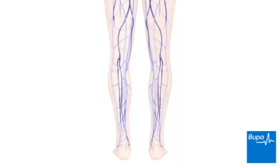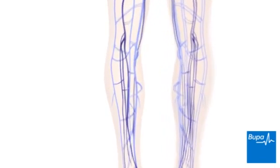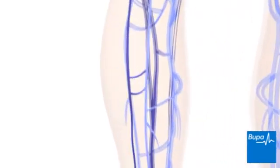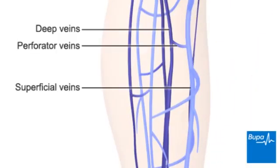The superficial veins lie below the surface of the skin. The deep veins pass through the deep tissues of the legs. They transport blood from the legs and feet back up towards the heart. The superficial and deep veins are connected by perforator veins. Here we show the position of the deep veins, superficial veins and perforator veins in the leg.